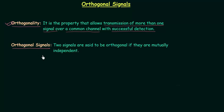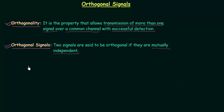Two signals are said to be orthogonal if they are mutually independent. If we have two signals and they do not interfere with each other — they are mutually independent — then we say these two signals are orthogonal signals. We can transmit these two signals using one common channel and successfully detect them at the receiver's end.